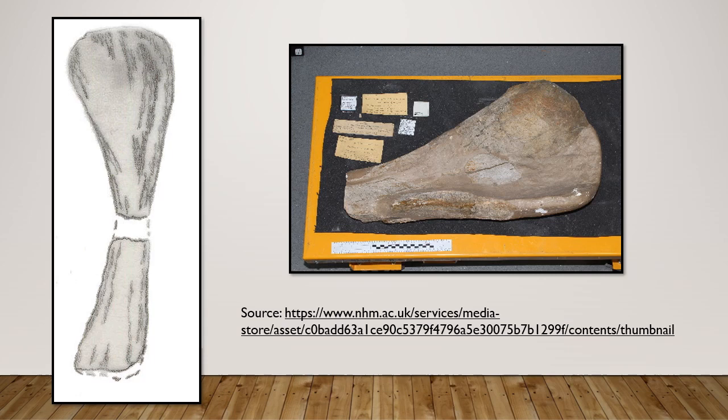Here is a photo of one of the bones from Dinodocus mackesoni on the Natural History Museum's online collections pages. It was collected by Henry B. Mackeson and described by Richard Owen, famous as the man who coined the term 'dinosaur'.